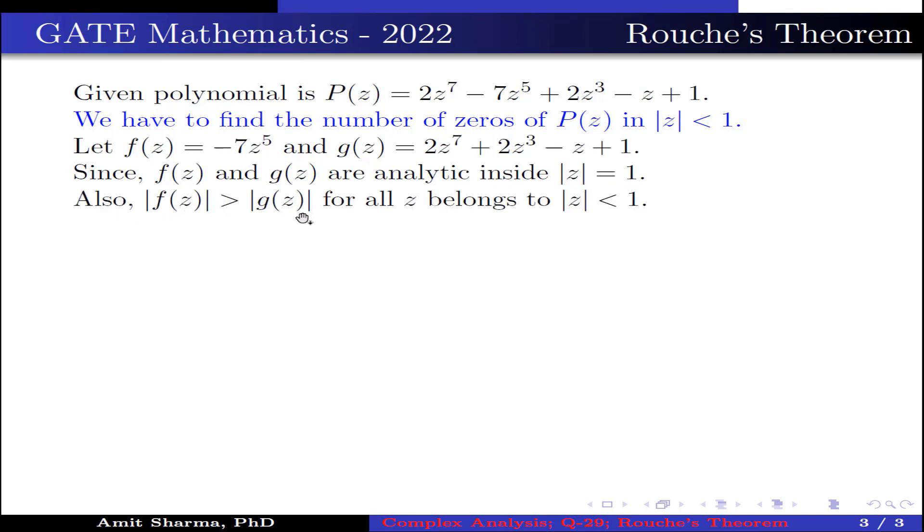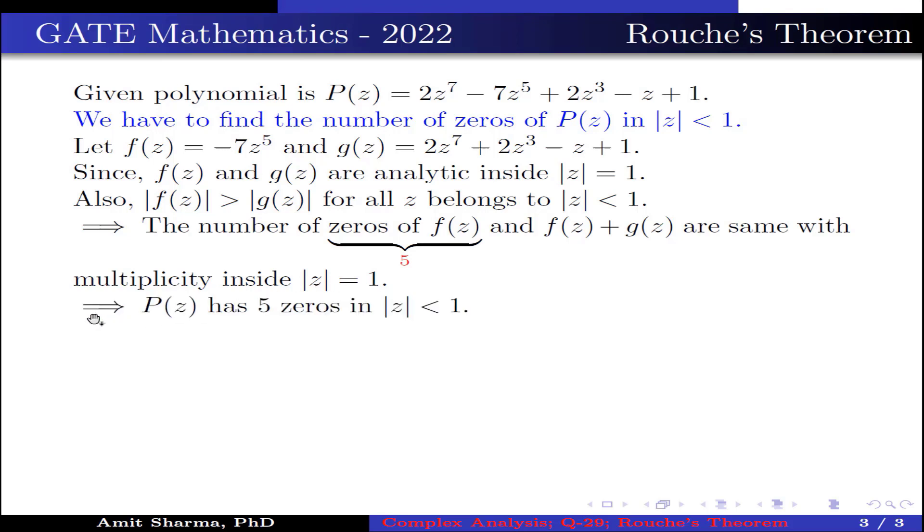Also, |f(z)| > |g(z)| for all z belongs to |z| = 1. This implies the number of zeros of f(z) and f(z) + g(z) are the same with multiplicity inside |z| = 1. This implies P(z) has 5 zeros in |z| < 1.